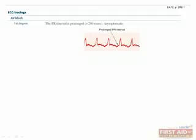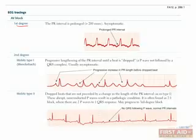Next we have the different types of AV block, also known as heart block. First degree AV block occurs when the PR interval is long, namely greater than 200 milliseconds. Otherwise, the EKG tracing looks pretty normal.